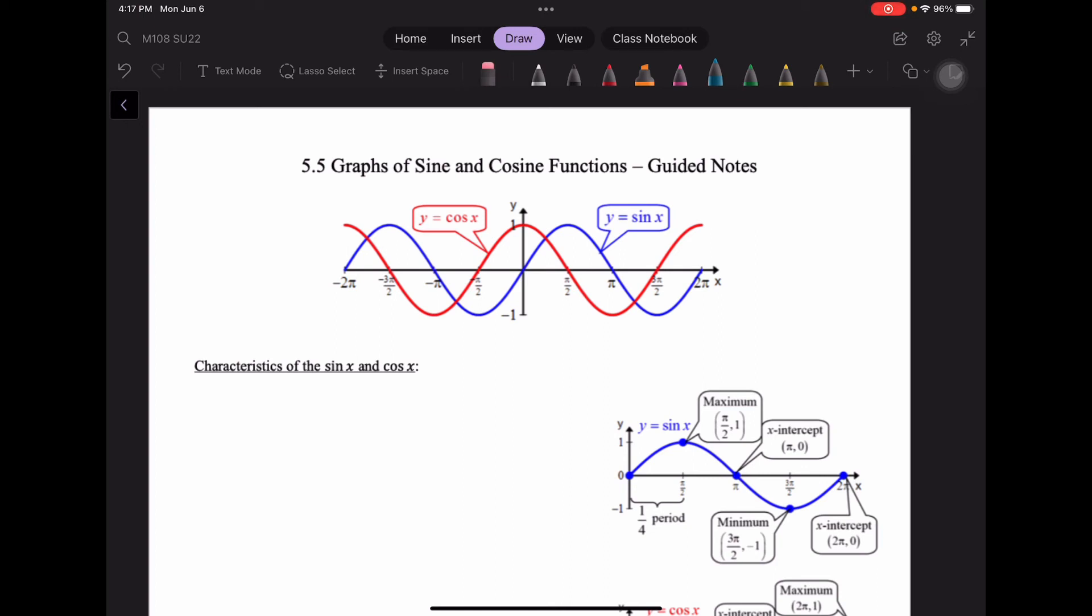Now sine and cosine are both periodic, having a period of 2 pi. They also have all real numbers as their domain. But notice right now their range, it's not going above negative 1 and 1. The only value, the highest value that we have is 1. The lowest value that we have is negative 1. So our maximum is 1 and our minimum is negative 1. These occur obviously at different spots for sine and cosine,